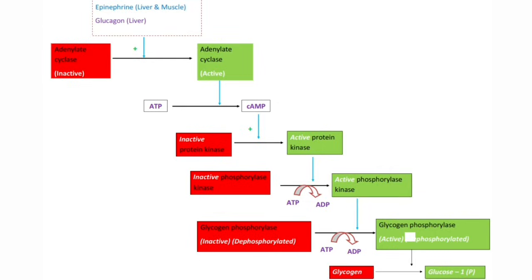Coming to regulation of glycogenolysis. Epinephrine in liver and muscle, glucagon in liver. They activate glycogenolysis. When the concentration of glucose is low in the blood, then liver will sense that concentration and it will release glucose into the circulation. Here, these hormones will activate adenylate cyclase. And activated adenylate cyclase converts ATP into cyclic AMP.